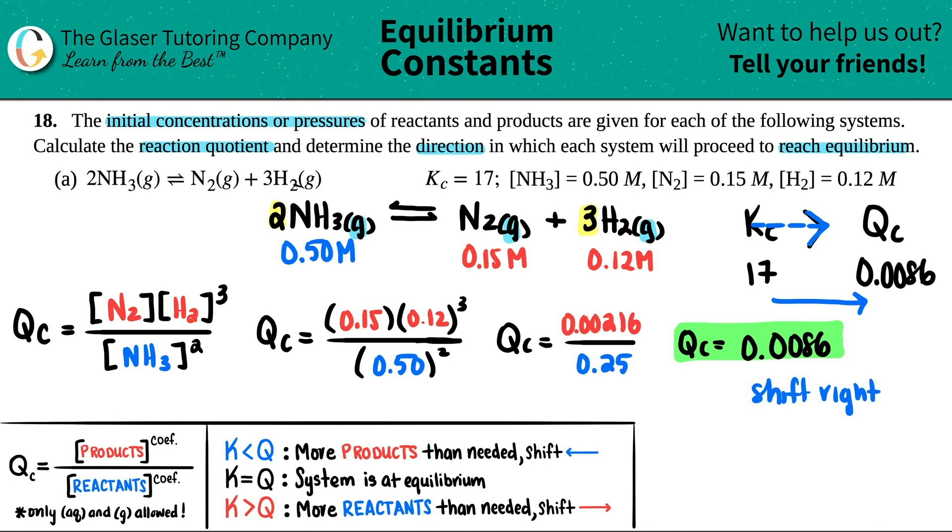But if you want the idea behind it, we're down over here. Whenever your K is greater than your Q, you have more reactants than you need. This is too high of a number. It's 0.5 as opposed to 0.15 or 0.12. So you need to get rid of these and increase this. That's why you would go from left to right. But either way, there you go.